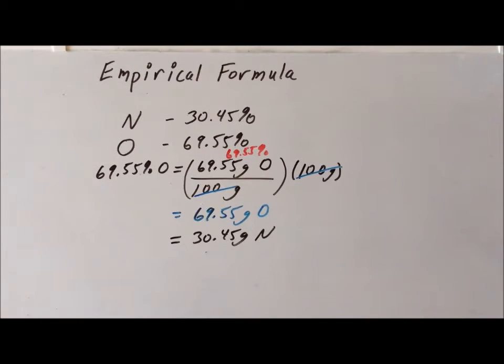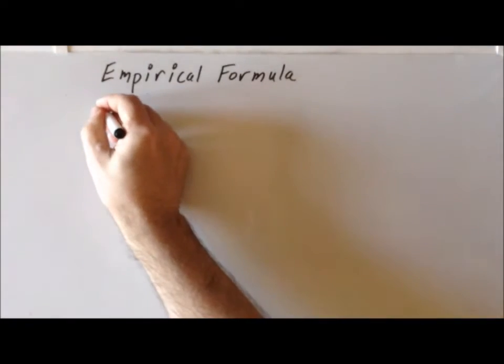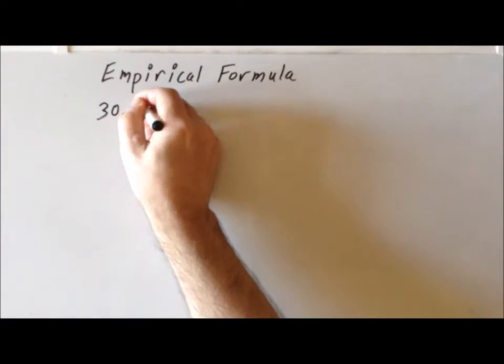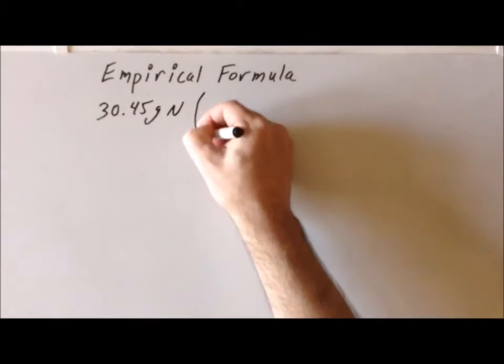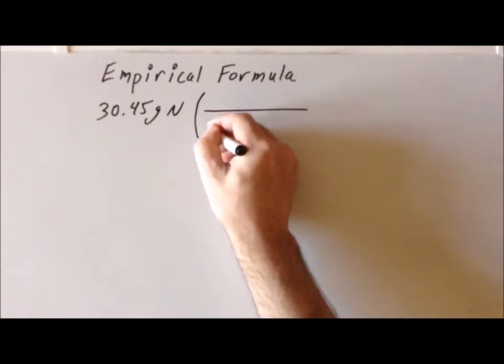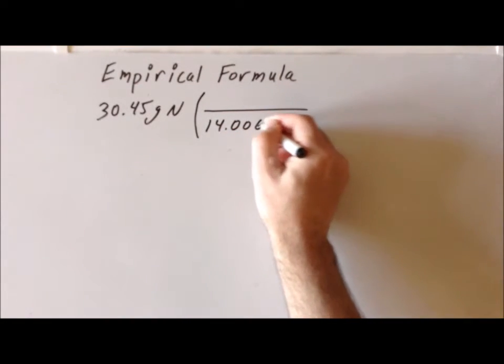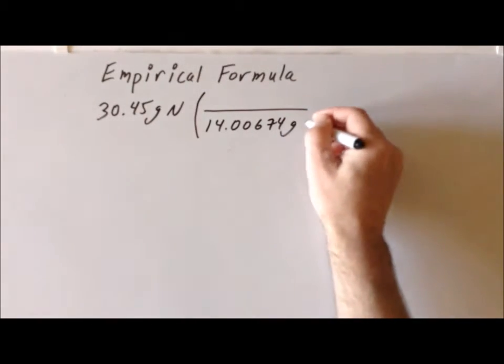In our next step, we want to determine how many moles of each element are present in this 100-gram sample, knowing that we have 69.55 grams of oxygen and 30.45 grams of nitrogen. We start with our 30.45 grams of nitrogen. And then we're going to use the fact that the atomic mass of nitrogen is 14.00674 grams. And the way that we can write this as notation is that we put the 14.00674 grams of nitrogen in the numerator.